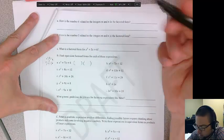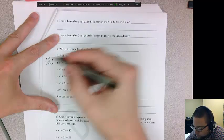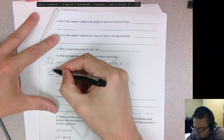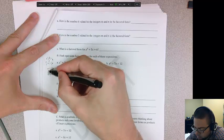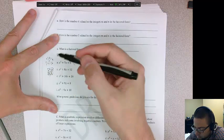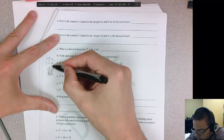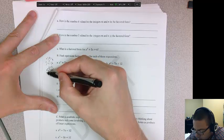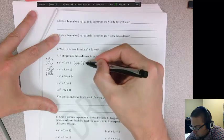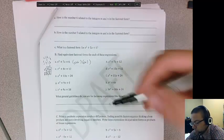So then I put it in my general rectangle and I say 6x and 1x. This is x squared and this is 6. So this would be x plus 6 and x plus 1. So x plus 6, x plus 1.